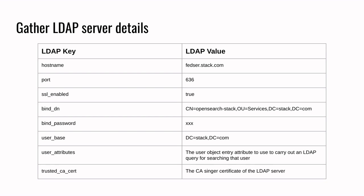The next thing is user base — basically where the users are present in your LDAP tree. In my case it is stack.com, so my users are based under the stack.com organization. The next thing is user attribute. Everything present in LDAP is an object, and each object contains a set of attributes. The user attribute we are going to use is the AD ID or LDAP ID — so we are going to look for a user with their LDAP ID, which is an attribute of a user object.